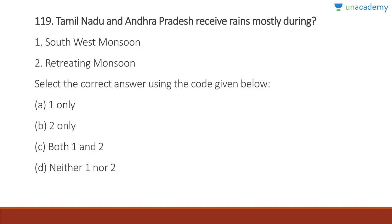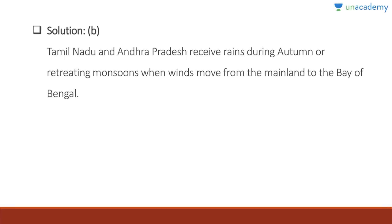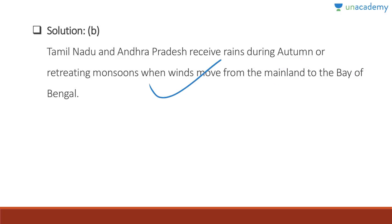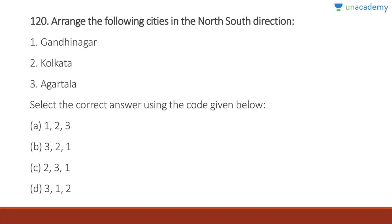Question 119: Tamil Nadu and Andhra Pradesh receive rains mostly during the retreating monsoon season. Answer is B, two only. Tamil Nadu and Andhra Pradesh receive rains during autumn or the retreating monsoon when winds move from the mainland to the Bay of Bengal.